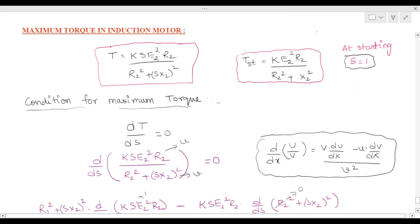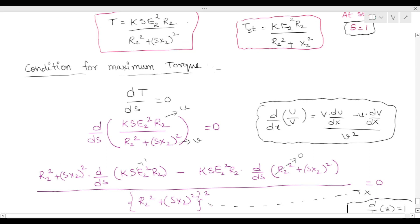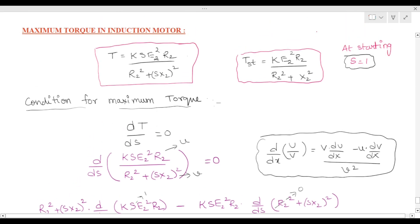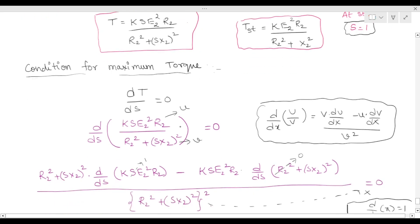If you want to derive the maximum torque formula, you need to find the condition for maximum torque. The condition is obtained by differentiating the torque with respect to slip s and setting it equal to zero: d/ds of T = d/ds [K · s · E2² · R2 / (R2² + (sX2)²)] = 0.